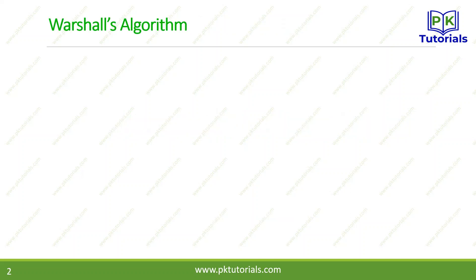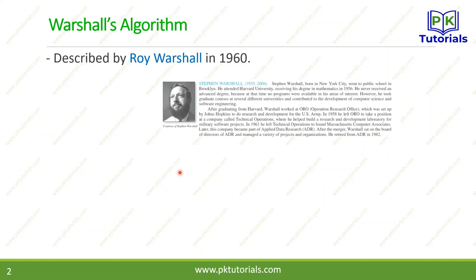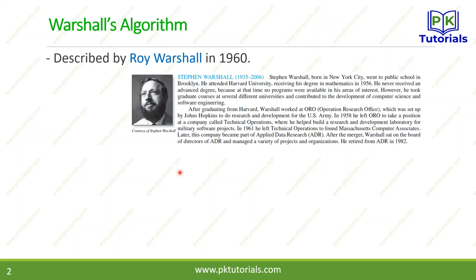Warshall's Algorithm is used for transitive closure. This algorithm is named after Roy Warshall, who described it around 1959 to 1960. This is a brief description of it — you can read more about it in the book.